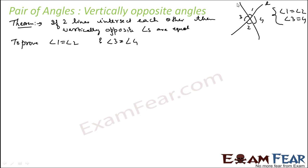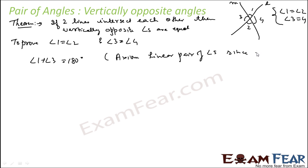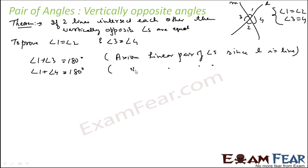Since this is a straight line — suppose this is line L and this is line M — since line L is a straight line, I can say that angle 1 plus angle 3 is equal to 180 degrees, using the axiom of linear pair of angles. Similarly, angle 1 plus angle 4 will also be equal to 180 degrees, because M is a line — again by the axiom of linear pair of angles.